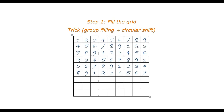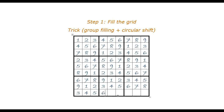Now we do a shift of seven positions and then fill the sixth row into the seventh row. Then for the eighth row, we do a shift of the seventh row into the eighth row. And for the ninth row, we do a shift of three positions of the eighth row and then fill the ninth row.